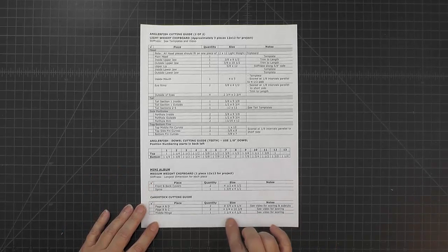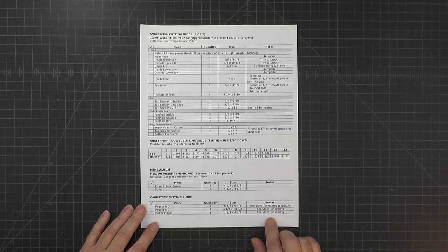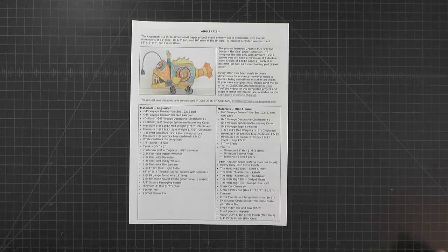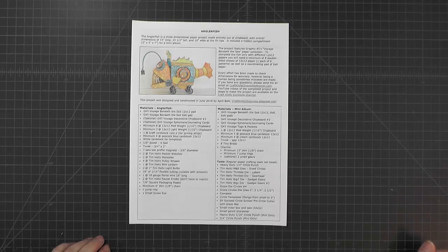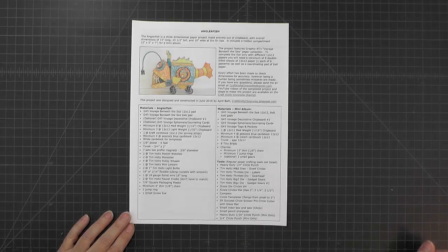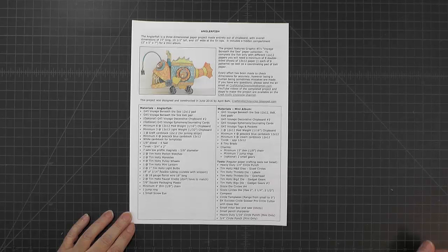When I say medium weight chipboard, I'm talking about chipboard that's 1/16th of an inch thick, and lightweight chipboard is half that thickness or 1/32nd of an inch.